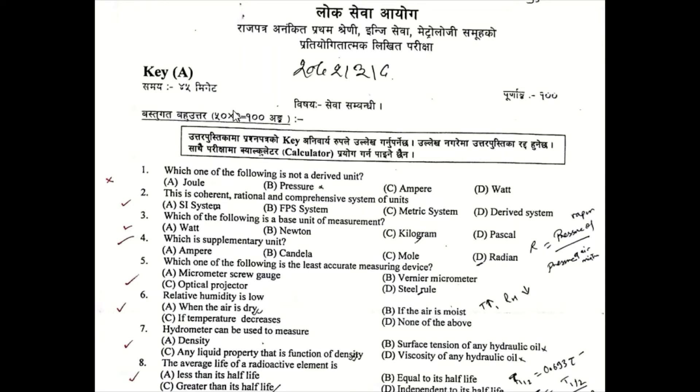Question Number 1: Which of the following is not a derived unit? The options are A) Joule, B) Pressure, C) Ampere, D) Watt.